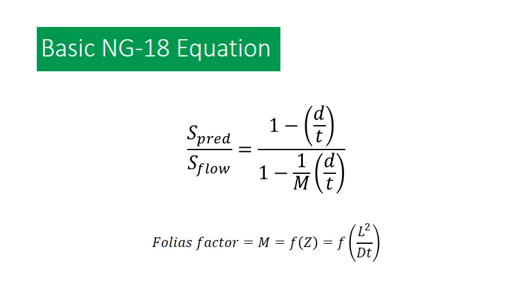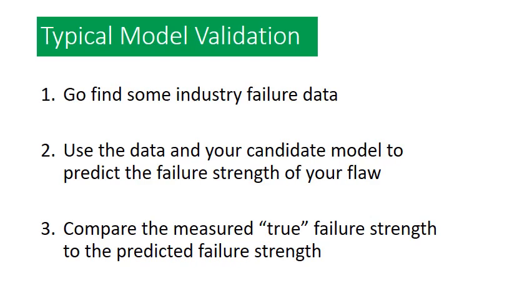Typically when you're doing model validation, it's a three-step process. First, you would go and find some industry failure data — I do this as a paper study, but for those working in laboratories, you can produce your own failure data. You would then use the data in your candidate model to predict the failure strength of a given corrosion flaw. The final step would be to compare your true failure strength — the one measured in the lab or found in the paperwork — to the predicted failure strength. If your model is correct, those numbers should line up. So let's try that.